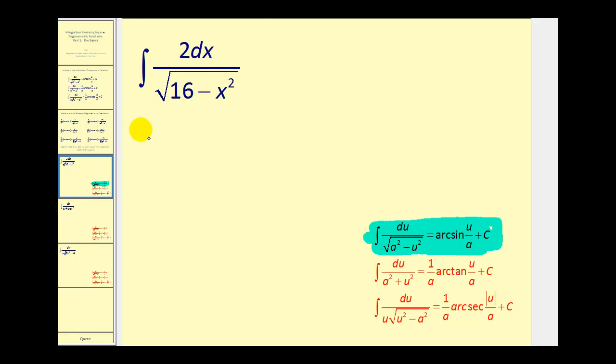So let's go ahead and rewrite this and see if we can make it fit this pattern. Let's first factor the two out. So we'd have dx in the numerator. And for our denominator, we want the square root of a squared minus u squared. So we could rewrite 16 as four squared, and u squared would be x squared. So what this tells us is that u is equal to x and a is equal to four.